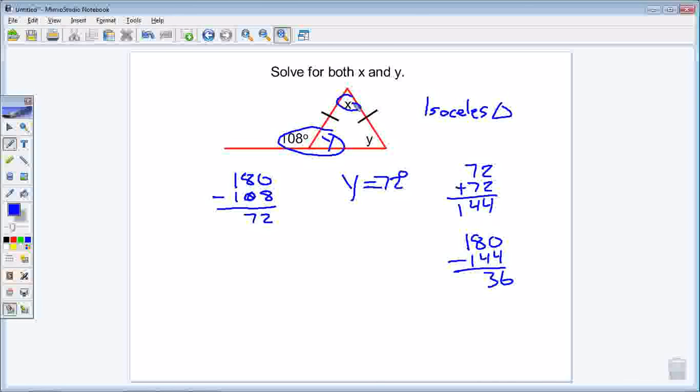So, x, my last angle, is going to be 36 degrees. We have to be careful that we know that we're doubling these two up. It gives me 144. My total triangle is 180, so that I'm left with 36 degrees for x.